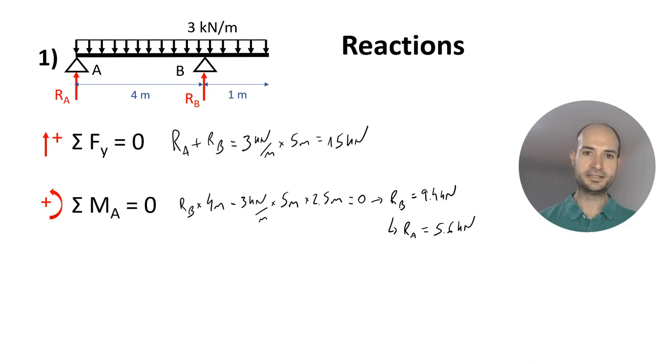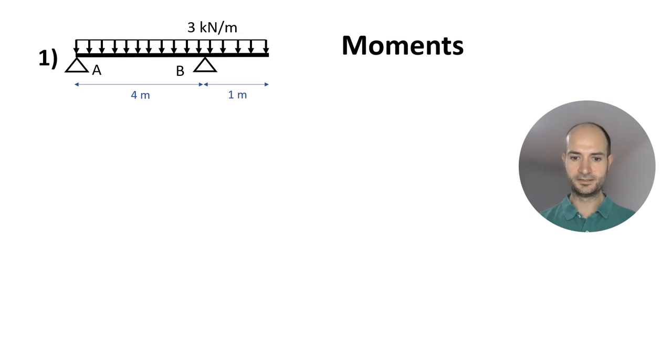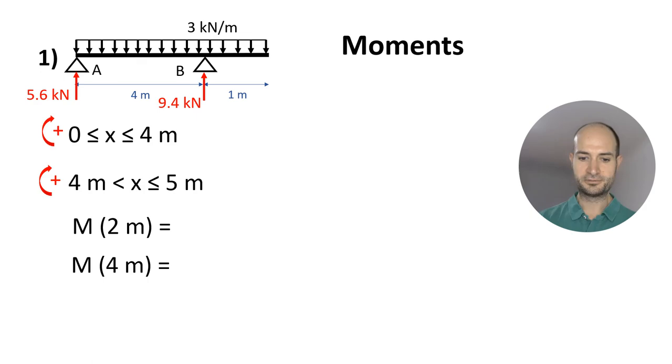Now we have the reactions. We can calculate the moment diagram. To calculate the moments, we already know the reactions. Let's calculate from 0 to 4 meters, from one support to the other, and then from support B to the end of the cantilever. From 0 to 4, going from left to right, the reaction is 5.6 times X, and now we subtract the line load. So it's 3 kN per meter times X to get the load, and the arm is X divided by 2. That's valid up to support B.